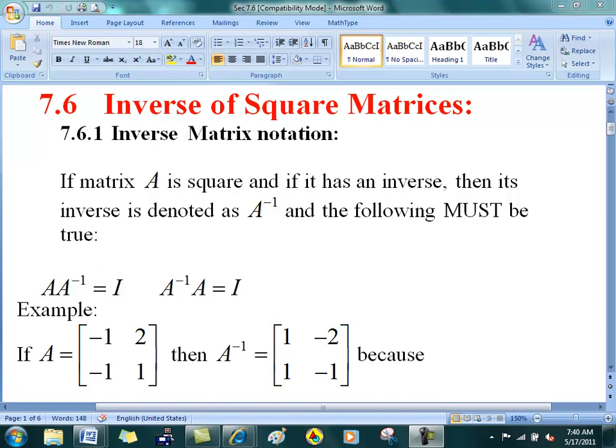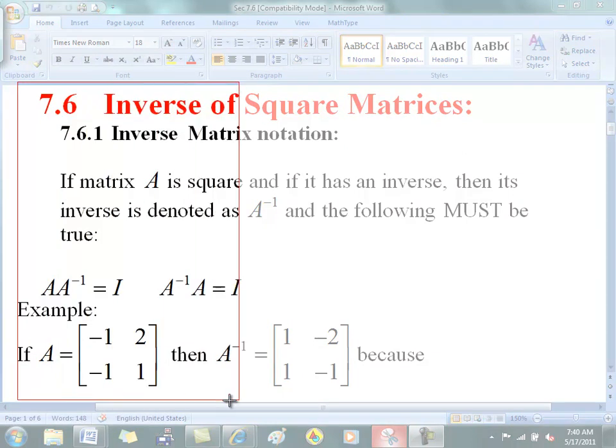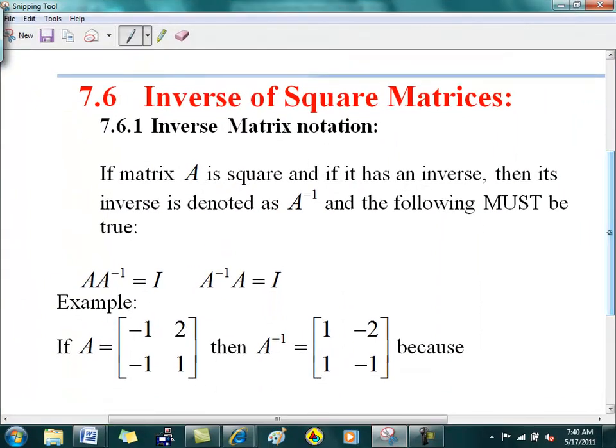Doesn't make sense. So the notation for the inverse of a matrix is this: A to the minus 1. And it's kind of analogous to like 3 and 3 to the minus 1 are inverses of each other because if you times the two of them, you get a 1.